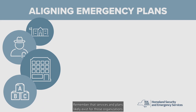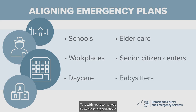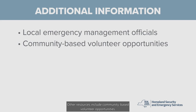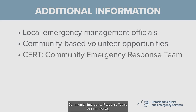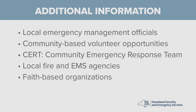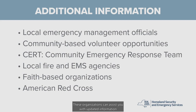Services and plans likely exist for organizations with which you are already involved, such as schools, workplaces, daycare centers, elder care or senior citizen centers, and babysitters. Talk with representatives from these organizations to supplement and align your emergency planning efforts. Local emergency management officials can be tremendous resources. Other resources include community-based volunteer opportunities, CERT teams, local first responders such as volunteer or career fire and EMS agencies, faith-based organizations, and long-standing disaster relief organizations such as the American Red Cross. These organizations can assist you in locating services such as shelters, food banks, or emergency medical treatment.